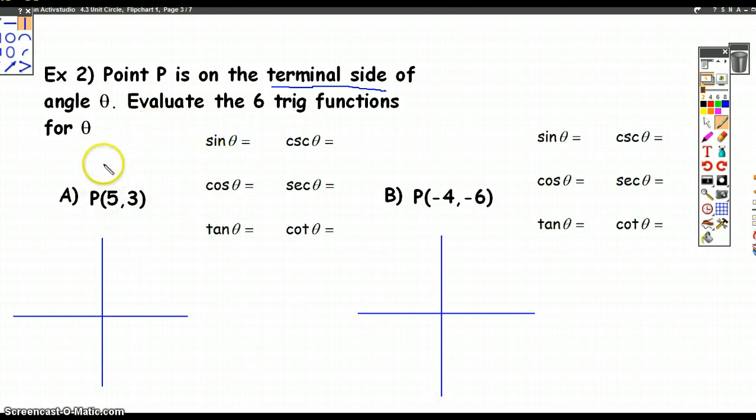Point P is on the terminal side of angle theta. That means the point 5, 3 is on the terminal side. Remember, the terminal side is where you end. So what we're saying is our terminal side, it must be doing something like that. And the point 5, 3 is on that terminal side. So that's the point 5, 3. And again, what that means is, since that's just a coordinate, that means that the x distance is 5 and the y distance is 3.